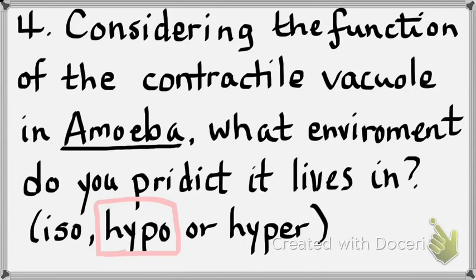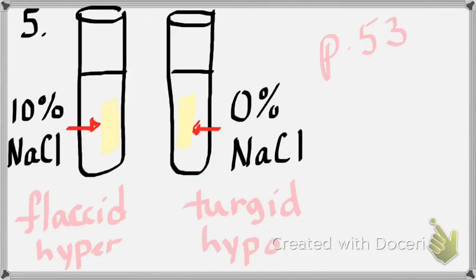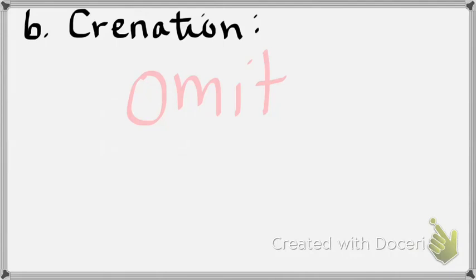Number six: cremation and hemolysis — we'll omit that part. But this is talking about page 51 and red blood cells. What is isotonic for red blood cells? 0.9%. What would happen if you put a red blood cell in a salty solution? It would shrivel. What would happen if you put a red blood cell in distilled water? It would swell and burst.